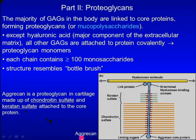Aggrecan is a proteoglycan. It is made up of chondroitin sulfate and keratan sulfate attached to the core protein. The protein is then attached to hyaluronic acid non-covalently.